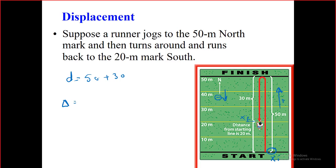For the distance, we have two stages in the journey — one up and one down. So the total distance is 50 plus 30, which equals 80. Even though one stage is downward, we don't use a negative sign for distance — distance is always positive. We only think about direction for vector quantities like displacement.